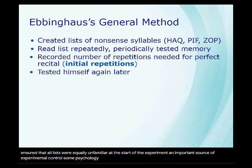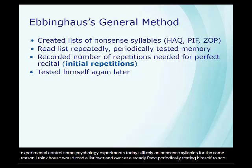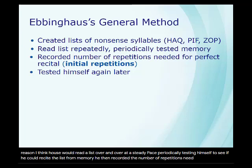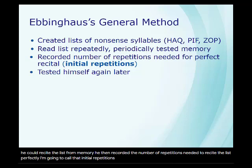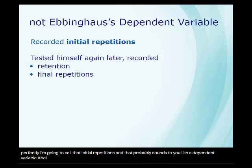Some psychology experiments today still rely on nonsense syllables for the same reason. Ebbinghaus would read a list over and over at a steady pace, periodically testing himself to see if he could recite the list from memory. He then recorded the number of repetitions needed to recite the list perfectly — I'm going to call that initial repetitions.